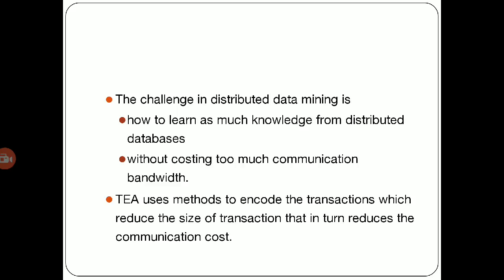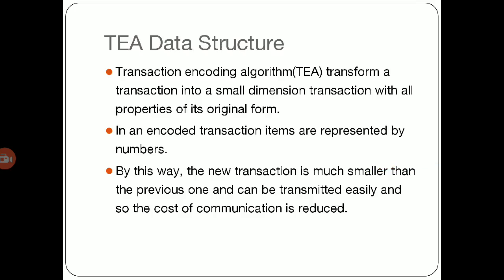Hence, the algorithm Transaction Encoding Algorithm (TEA) uses methods to encode the transaction, which reduces the size of the transaction. That in turn reduces the communication cost. Hence, our aim is to obtain the data structure. Transaction Encoding Algorithm transforms a transaction into a small dimension transaction with all properties of its original form.